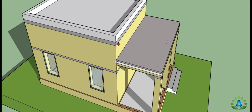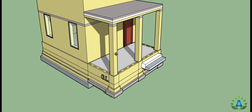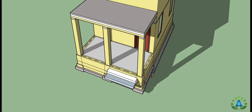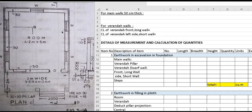Here is the RCC slab and above the RCC slab there is a parapet wall. Here is the ground level of this building, and below the ground level we can see different types of footing for this pillar as well as the veranda walls. In this question we are going to use the centerline method for the main walls and long wall short wall method for the veranda portion.